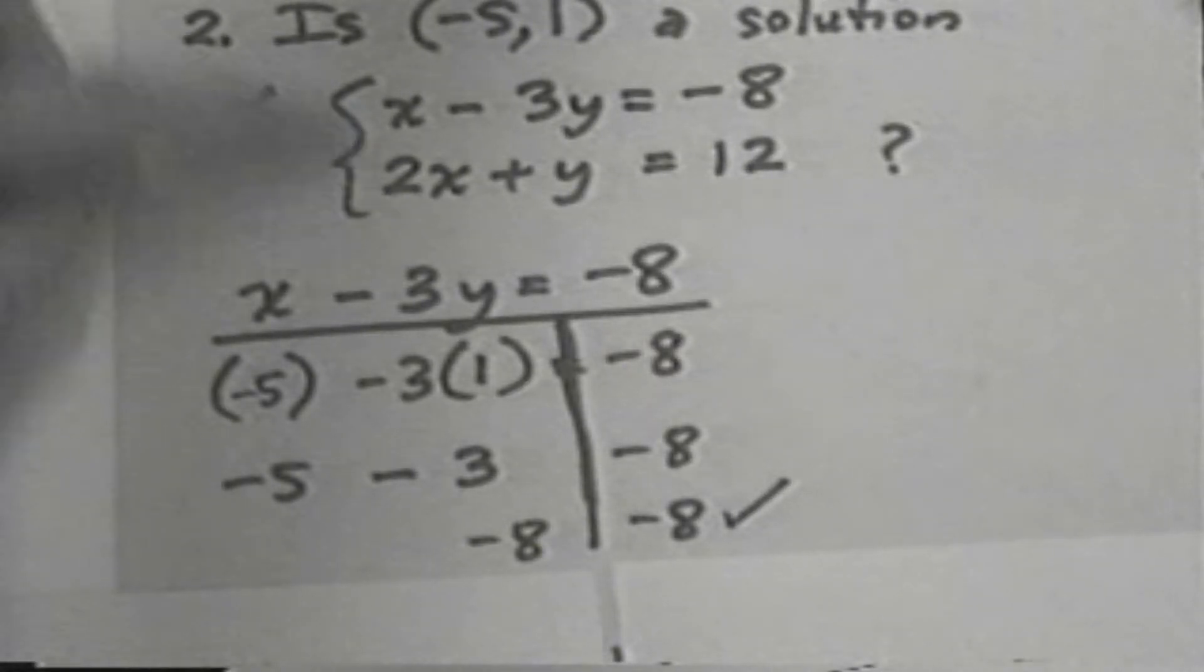Next, we'll try the second equation, 2x plus y equals 12, and try checking our ordered pair in that one.